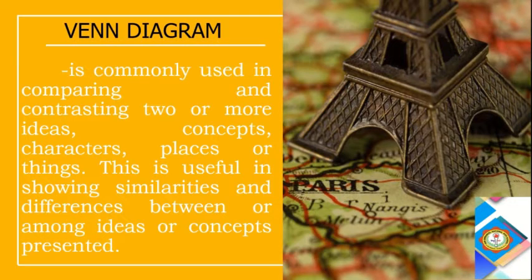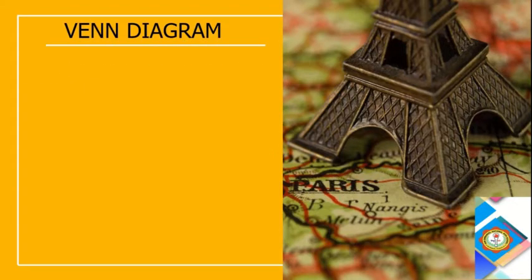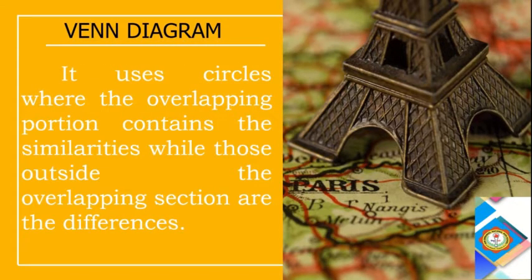A Venn diagram is commonly used in comparing and contrasting two or more ideas, concepts, characters, places, or things. It is useful in showing similarities and differences between or among ideas. In Activity 1, you compared the similarities and differences of Facebook and Twitter. It uses circles where the overlapping portion contains the similarities, while those outside the overlapping section are the differences.